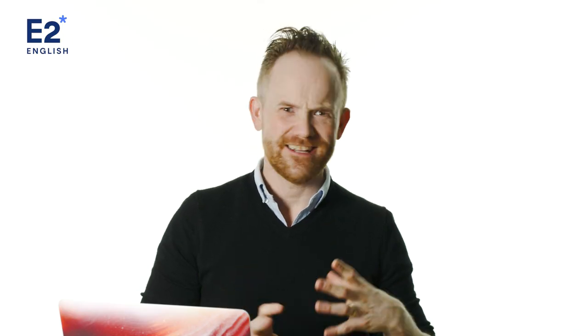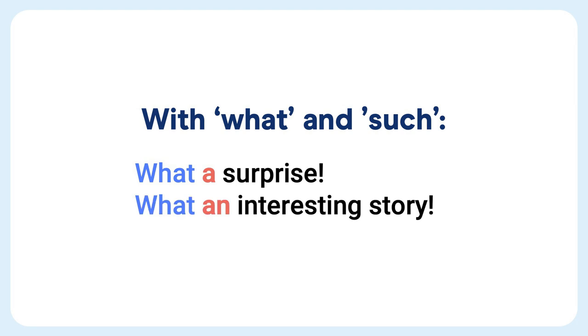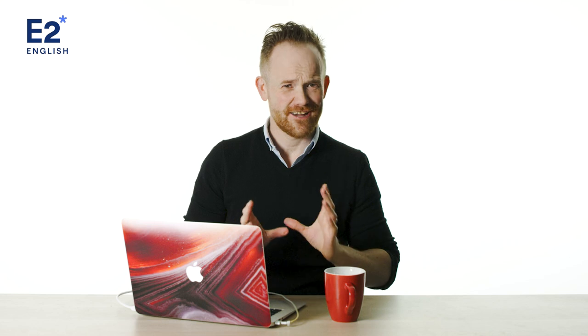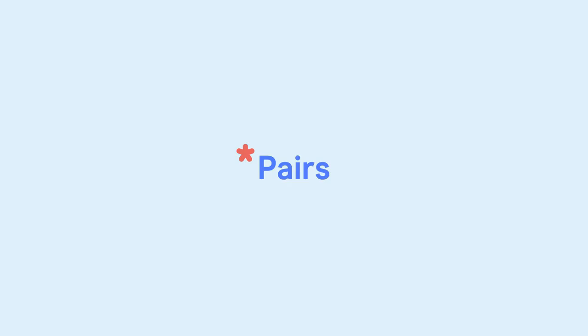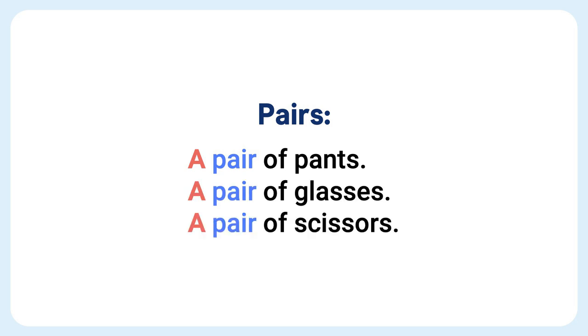Now let's do one that's a little bit more fun — 'what' and 'such.' To show surprise and emotion, we can add 'a' or 'an' after 'what' or 'such.' For example: 'What a surprise!' 'What an interesting story!' 'It is such a good movie.' 'I had such a good day.' And here's another nice easy one — pairs: 'a pair of pants,' 'a pair of glasses,' 'a pair of scissors.'